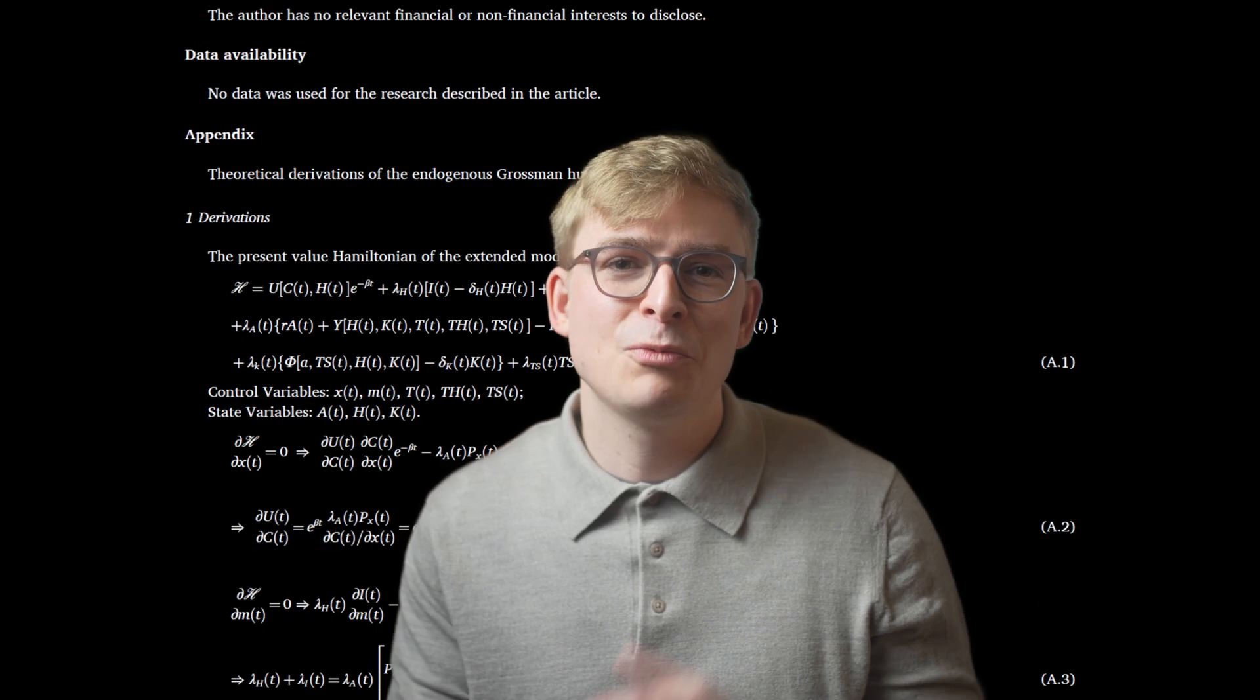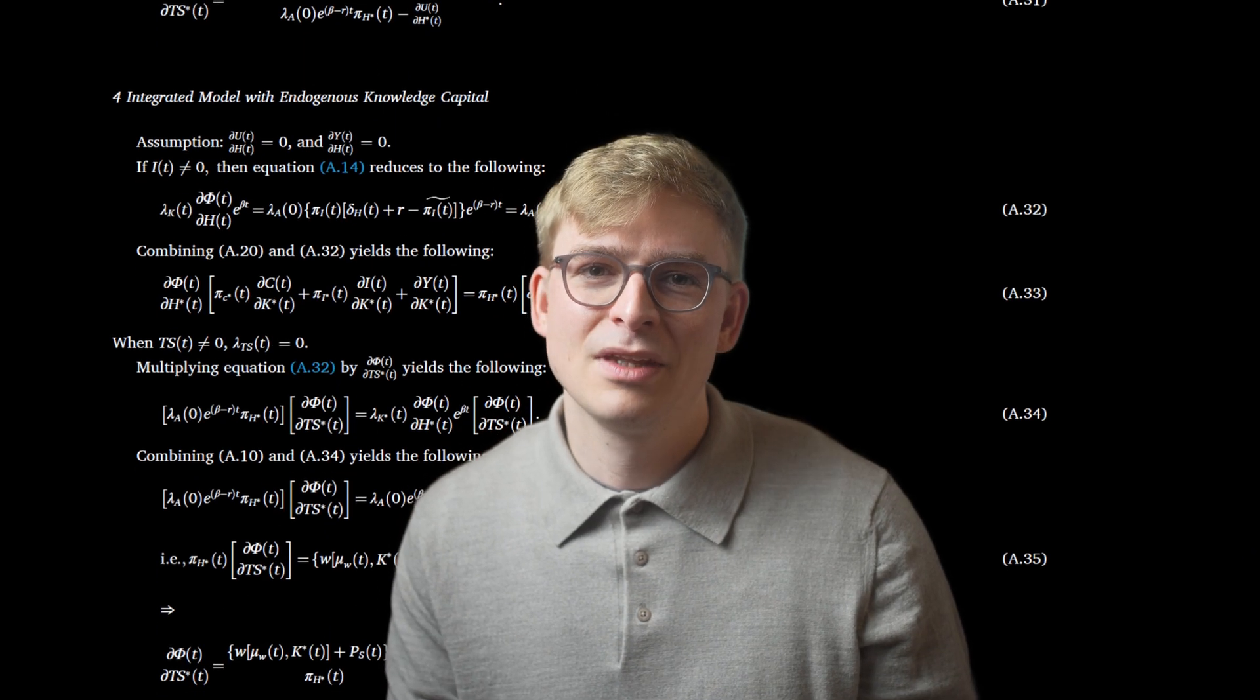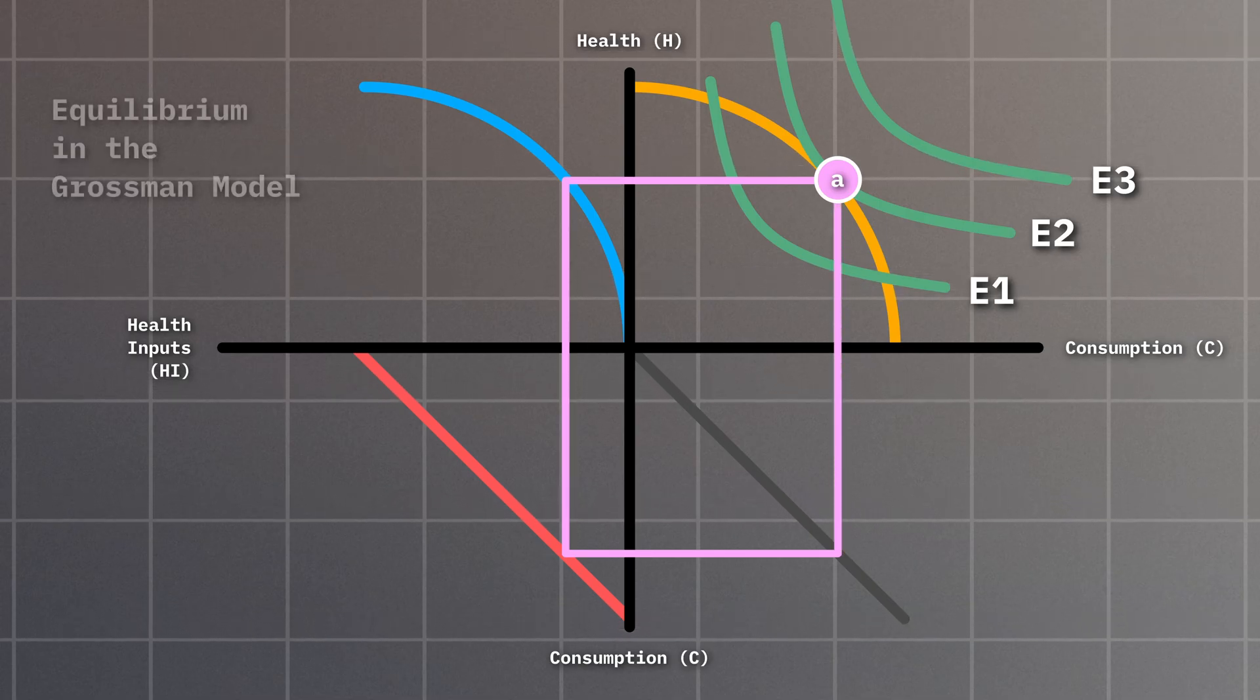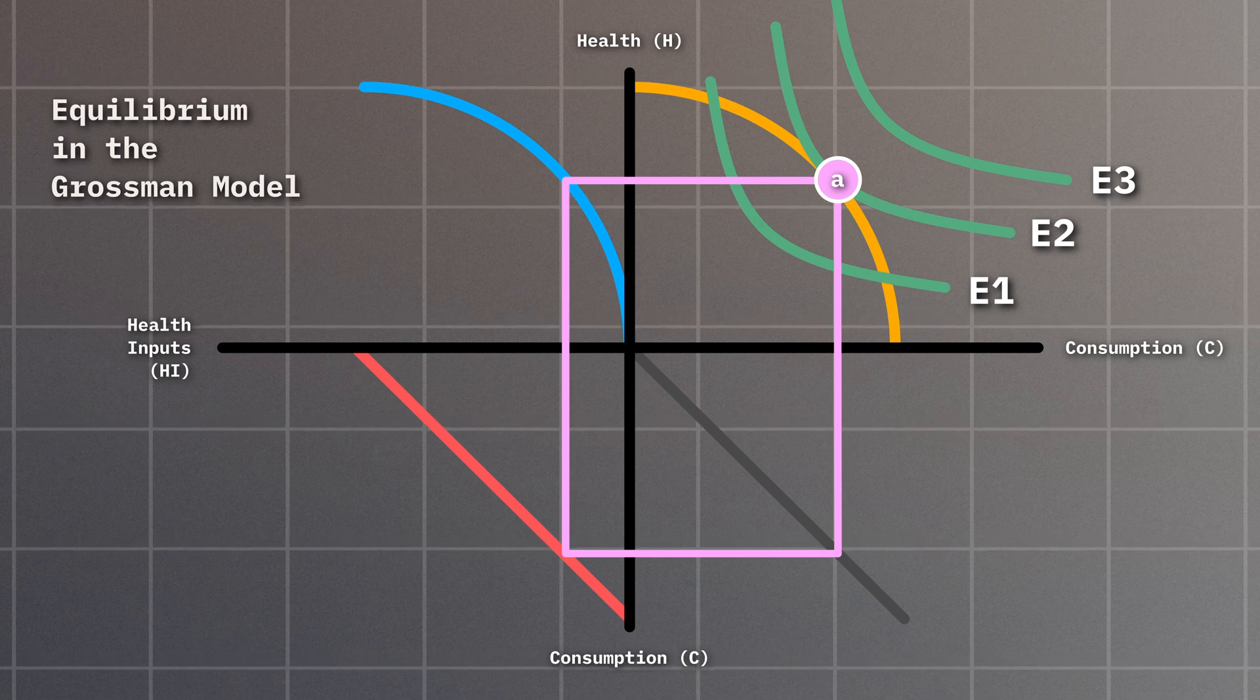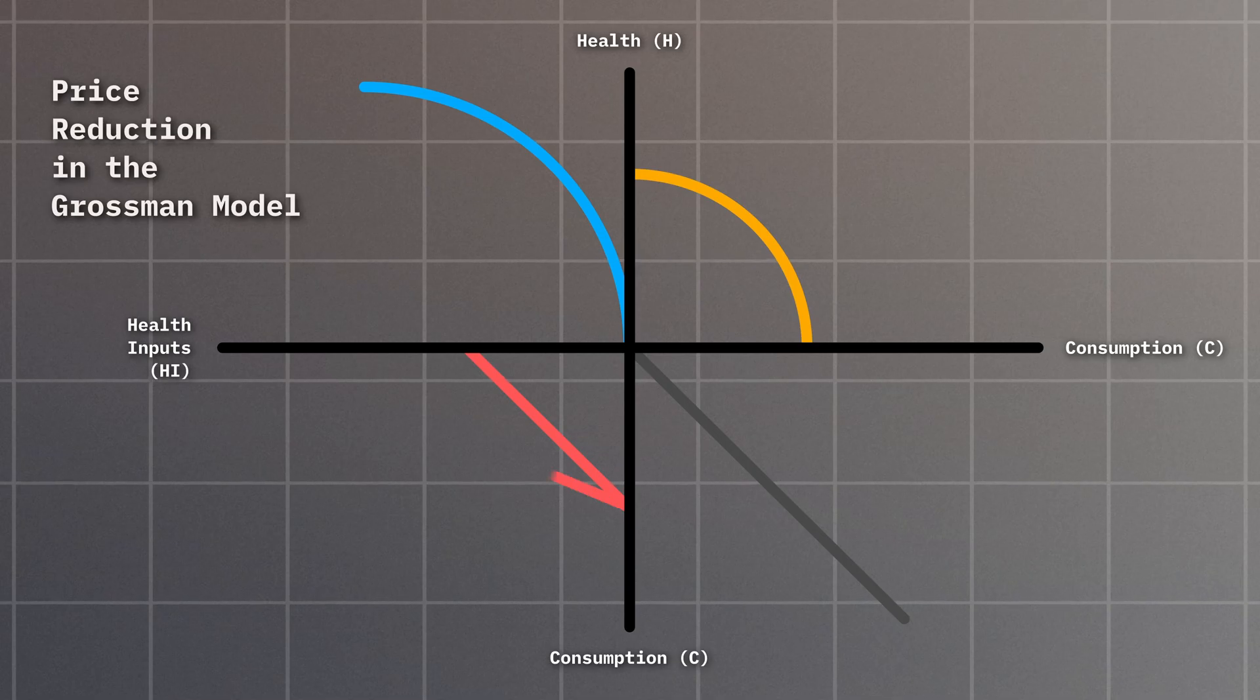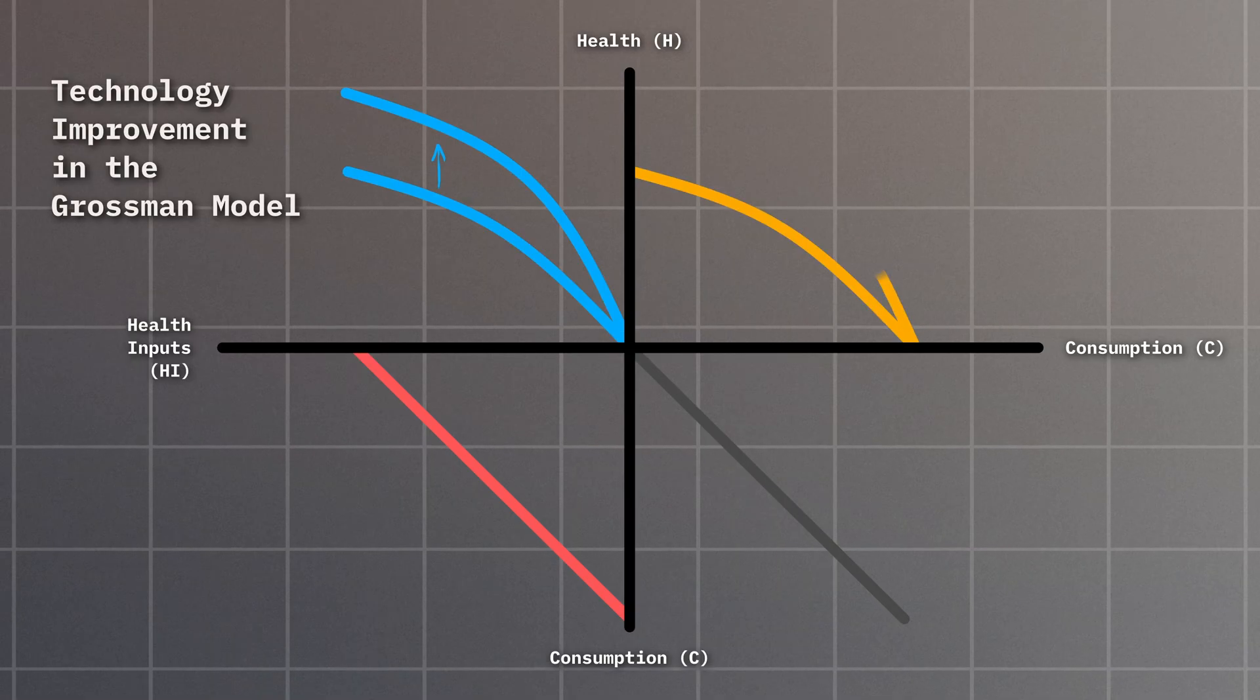The Grossman model is often explained with heavy use of advanced calculus, but today we'll skip the math. Instead, I'll walk you through a visual primer covering the basic model as well as three scenarios that illustrate how different factors change the outcomes of the model.